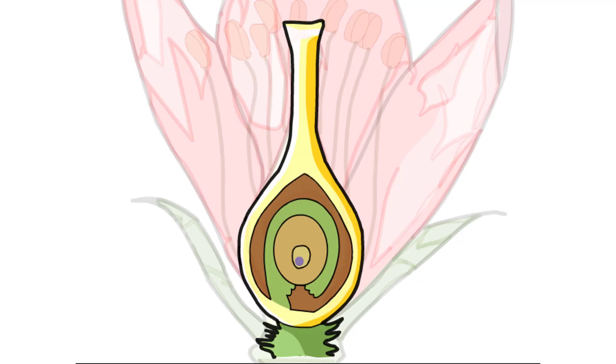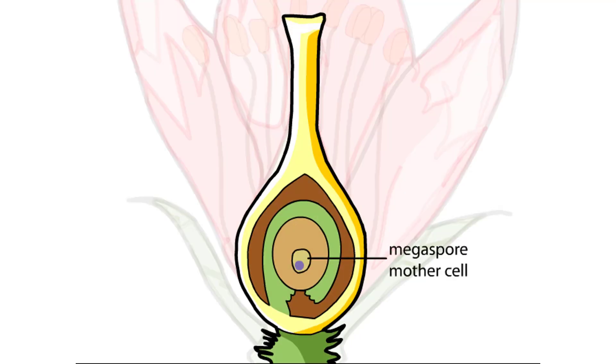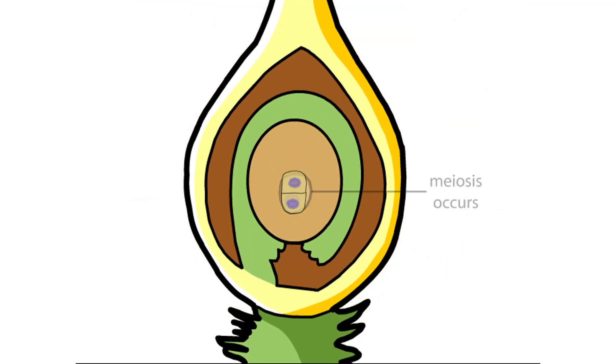The ovule contains a reproductive cell called the megaspore mother cell or megasporocyte. This cell is diploid and undergoes meiosis to produce four haploid megaspores.